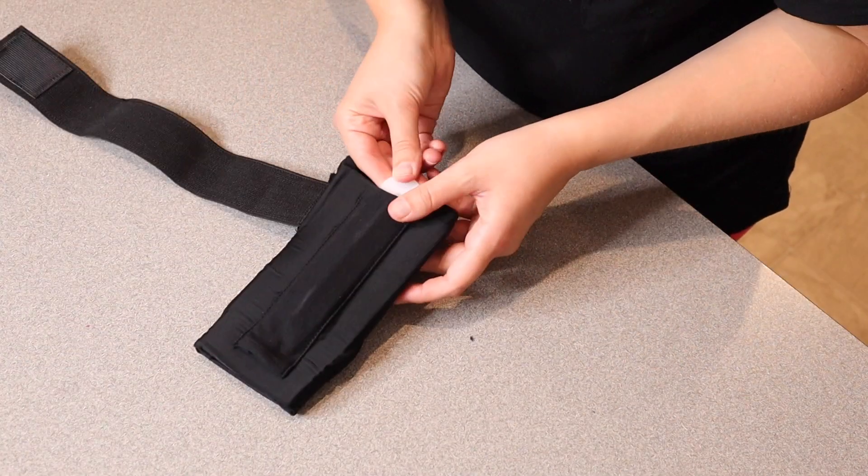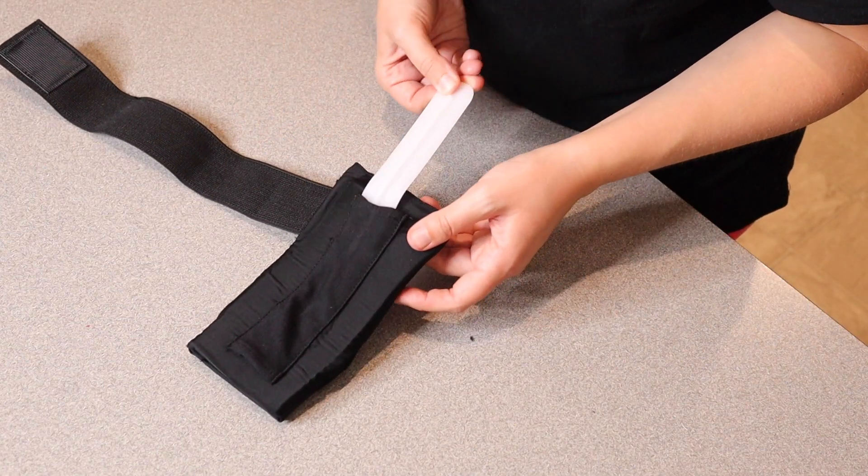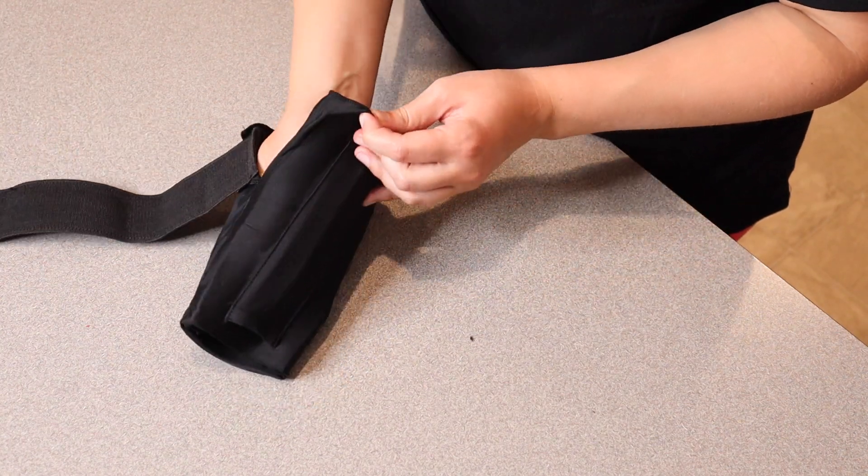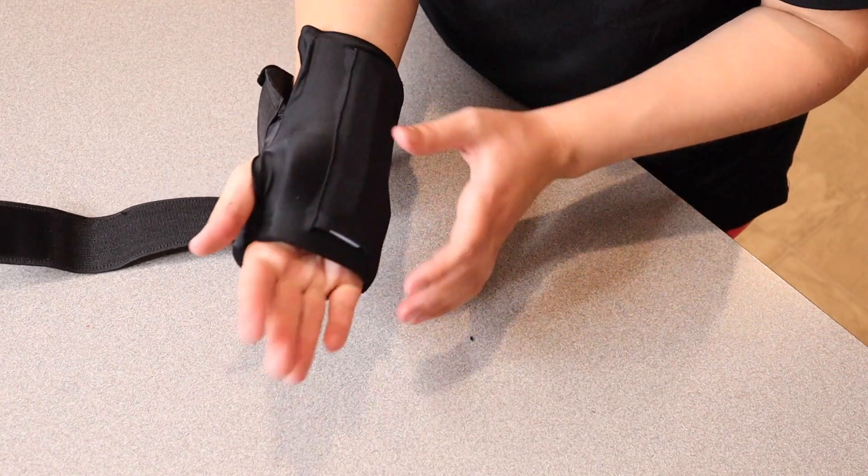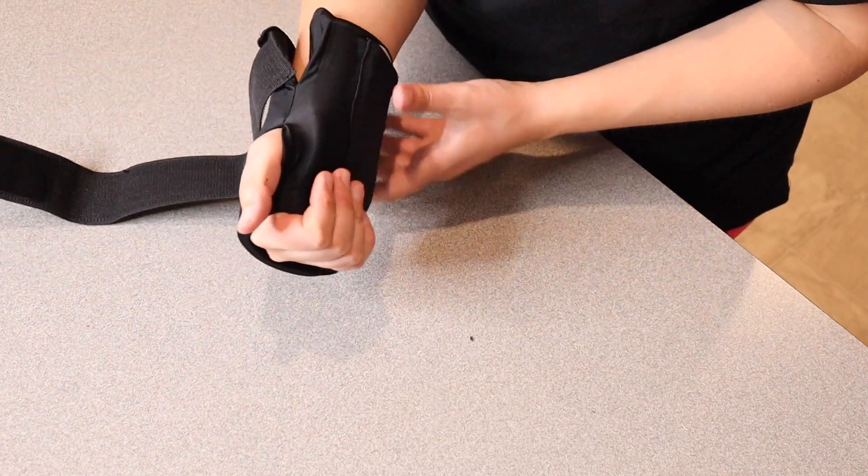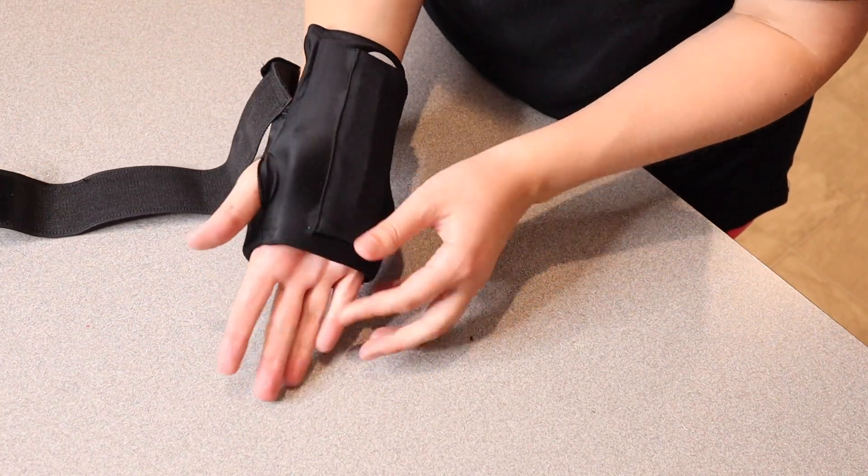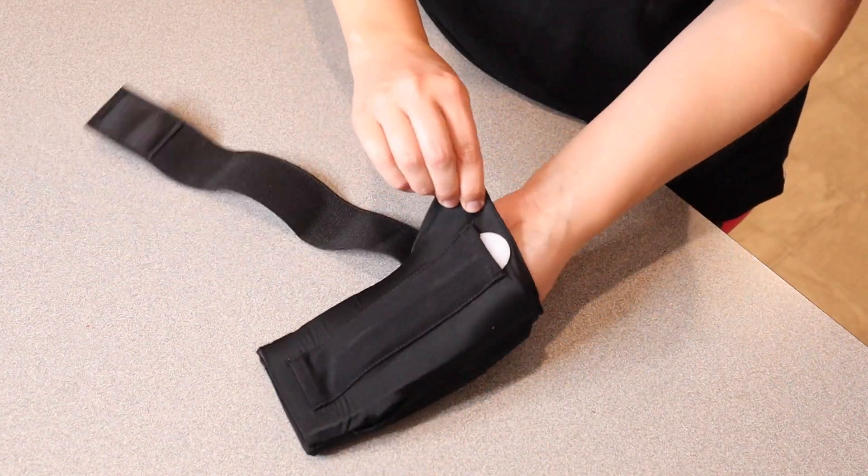So you can see with this splint in here I'm gonna go ahead and show you how you can use this for both your left and your right hand. You're gonna stick your hand in here and you're gonna have your thumb sticking out in this area and you have the splint just to create that extra stability and you can do the same thing with your left hand.